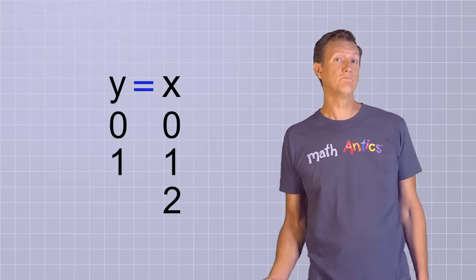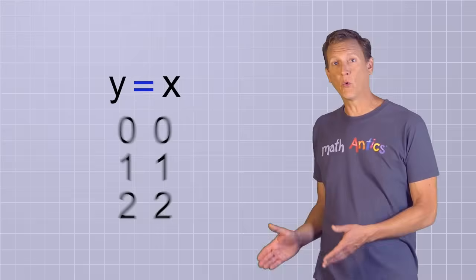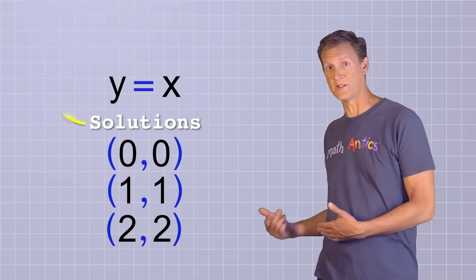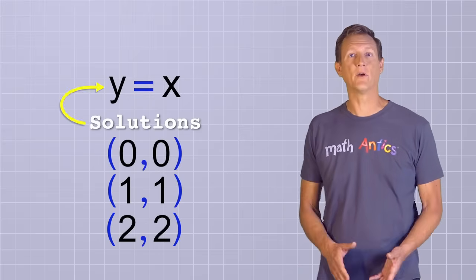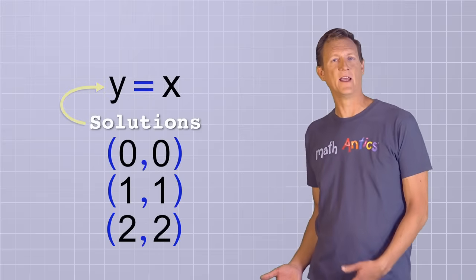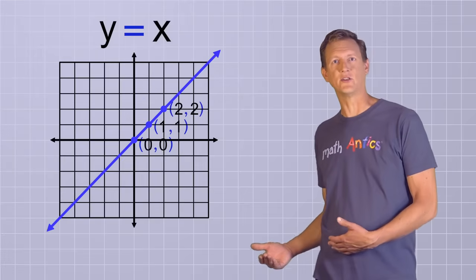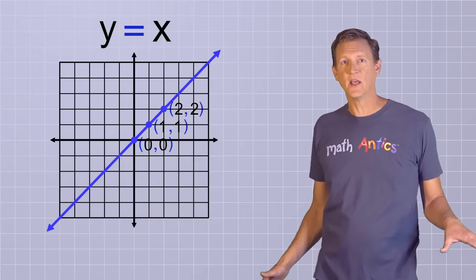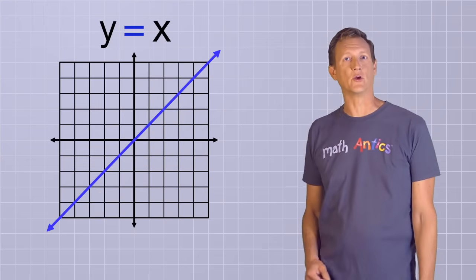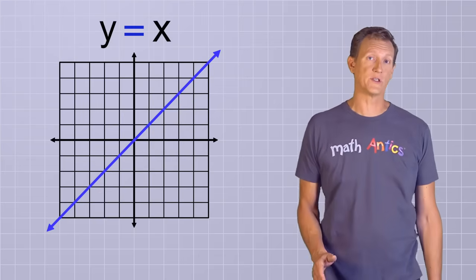If x is 2, then y is 2. Every ordered pair that's a solution for this equation will have the same number for y that it does for x. And if we graph some of those points on the coordinate plane, connecting the dots to show that there are infinite possibilities, we get a diagonal line that goes right through the middle of the quadrants 1 and 3.